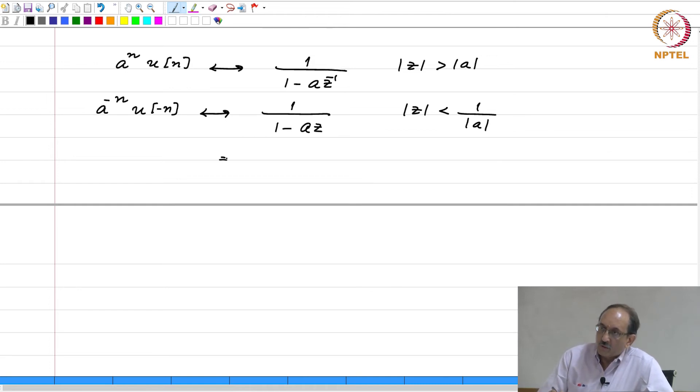Now, let us multiply numerator and denominator by minus a inverse z inverse. Therefore, this becomes minus a inverse z inverse and this is 1 minus a inverse z inverse. This is mod z less than 1 over mod a, which I have written as mod a inverse.